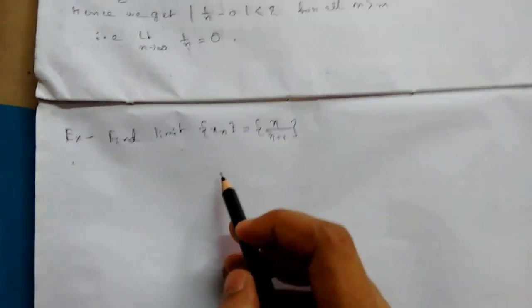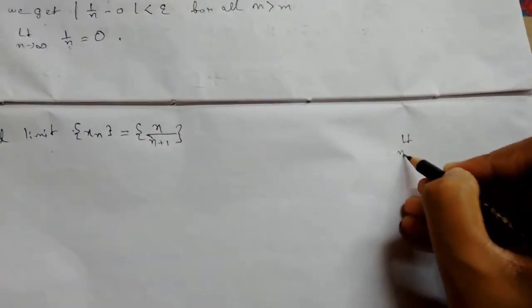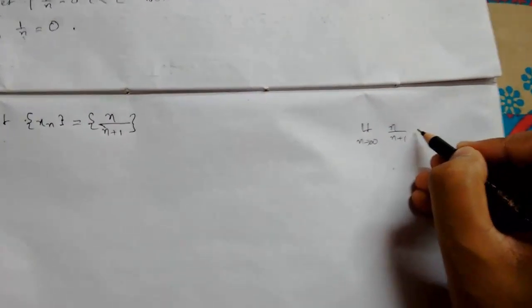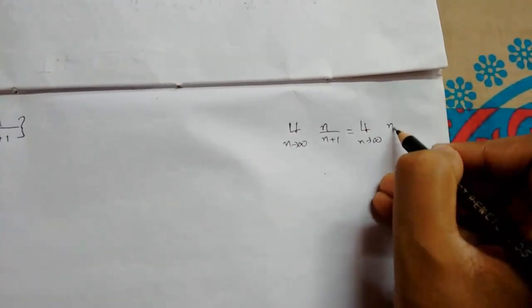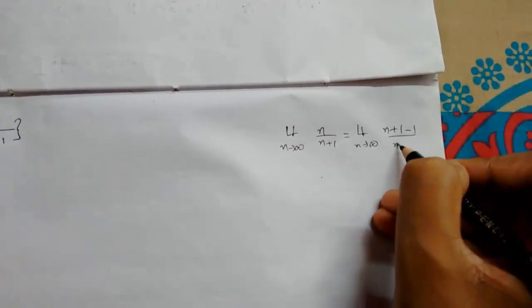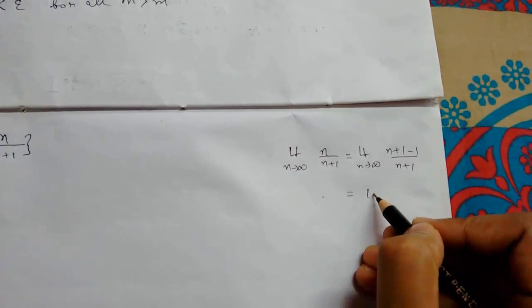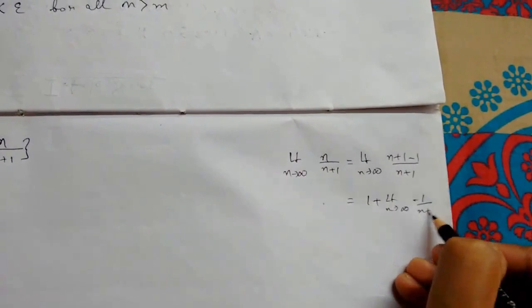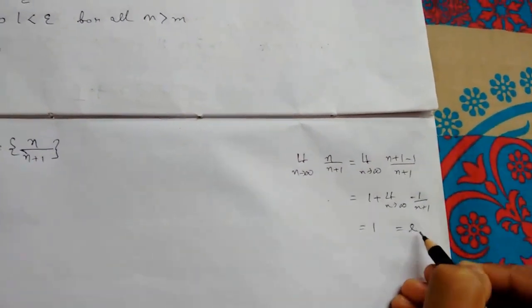Now let us check another example: find the limit of x_n = n/(n+1). Again we first calculate the rough answer. Limit as n tends to infinity of n/(n+1). Simplifying: write n/(n+1) as (n+1−1)/(n+1) = 1 − 1/(n+1). So the limit gives 1 − 0 = 1. Our L is 1.